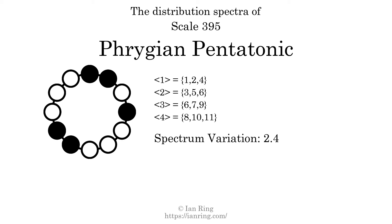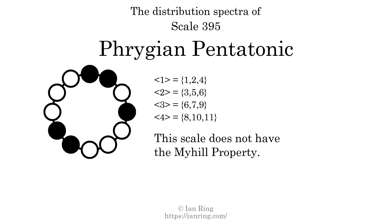The highest spectrum width is three. Since this is greater than one, we know that this scale is not maximally even. If every spectrum has exactly two specific intervals, we call that the Myhill property. This scale does not have the Myhill property. Since the generic interval ranges overlap, this scale is an improper scale.